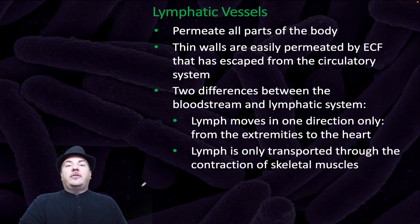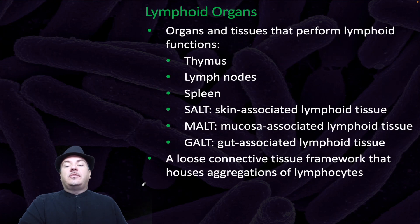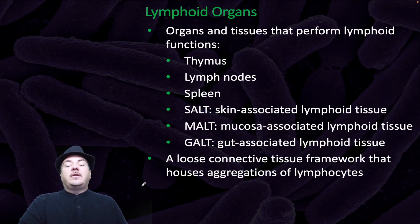The two differences between the bloodstream and the lymphatic system are: lymph moves in one direction only, from the extremities to the heart, and lymph is only transported through the contraction of skeletal muscles. Organs and tissues that perform lymphoid functions include the thymus, lymph nodes, spleen, SALT or skin-associated lymphoid tissue, MALT or mucosa-associated lymphoid tissue, GALT or gut-associated lymphoid tissue, and a loose connective tissue framework that houses aggregates of lymph nodes.